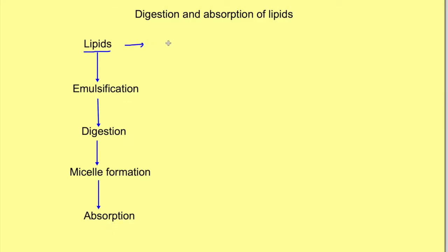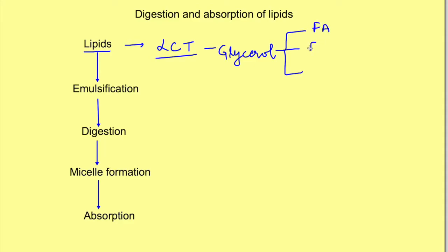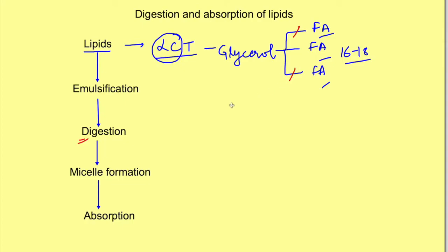The major lipid present in our diet is long-chain triglyceride, which consists of a glycerol molecule attached to three molecules of fatty acid by ester linkages. Since the name is long chain, these fatty acids are long chain, generally with 16 to 18 carbon atoms. Digestion is basically breakdown of these ester linkages of the long-chain triglycerides.